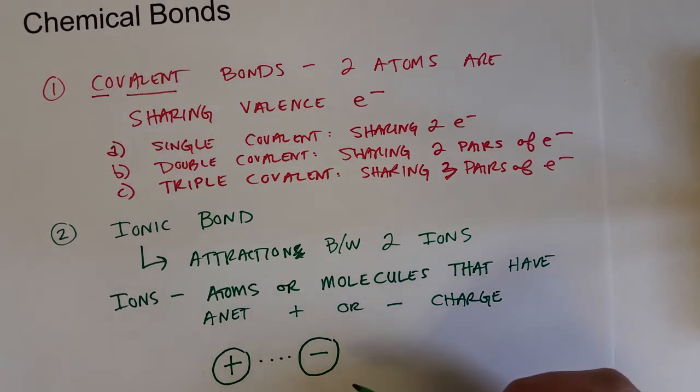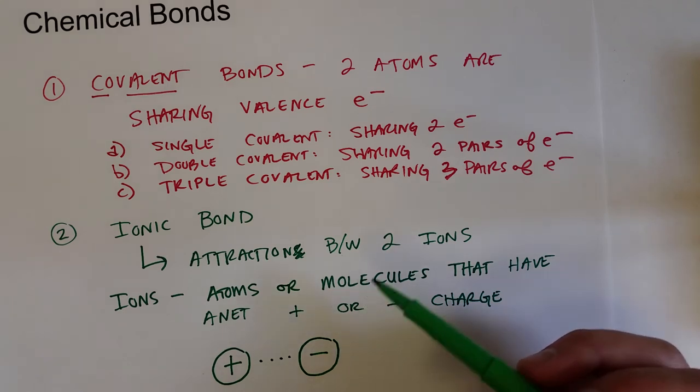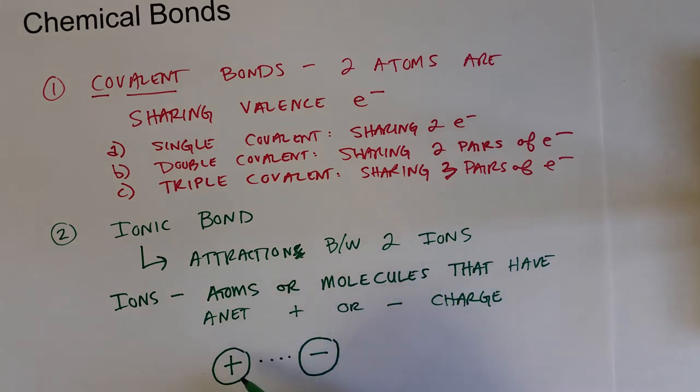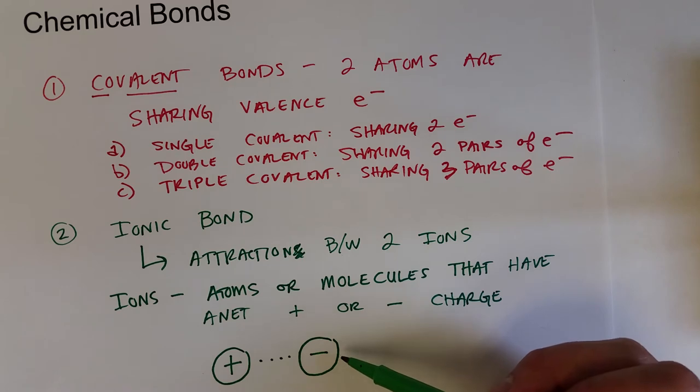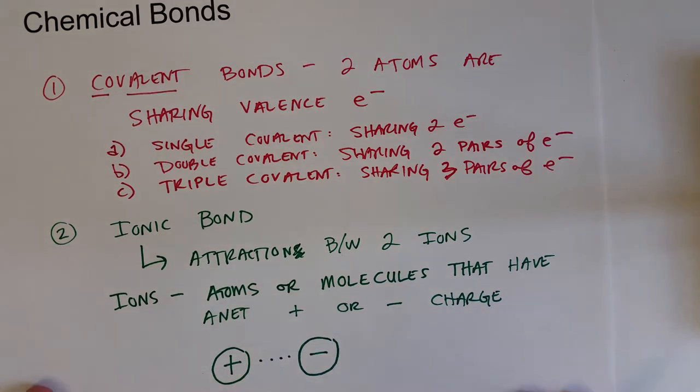This can result from the transfer of electrons, which we'll talk about in a little bit, where one atom loses an electron or transfers an electron to another atom, and that results in a positively charged ion for the atom or molecule that just lost an electron, and a negative charge for the atom that just gained an electron.